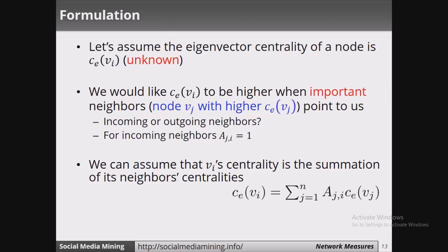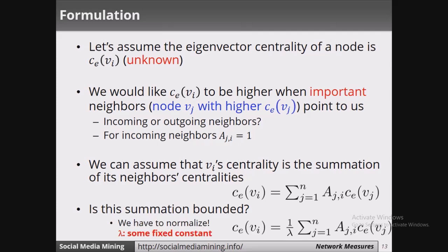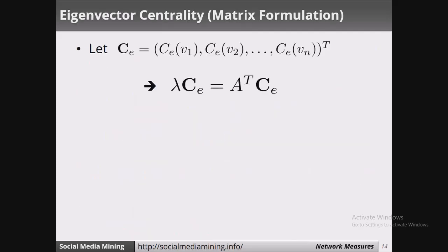The assumption we have made is that the centrality of a node is proportional to the centrality of its neighbors. This is how we formulate this scenario. Since I am assuming proportionality, I will introduce a fixed constant called lambda. So ce(vi), the centrality of node vi, will be equal to 1 upon lambda times the summation of j equals 1 to n of a_ji times ce(vj). The centrality of vi equals 1 over lambda times the sum of the centralities of its neighbors.